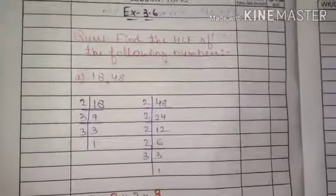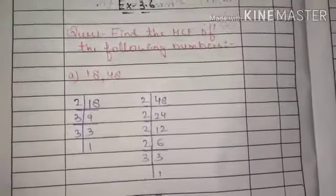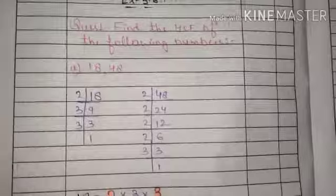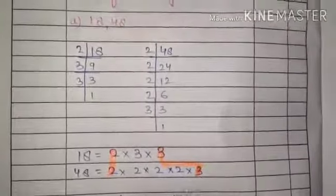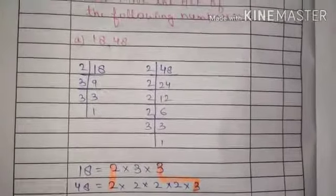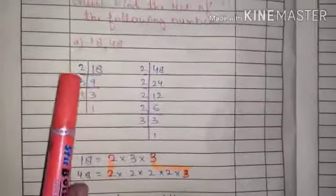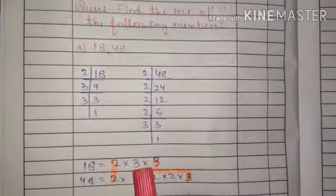So, this is our prime factorization for the 18 and 48. Now, we have multiplication of the form. 18, we have 2, 3, 3. 2 into 3 into 3. 2 into 3 into 3.